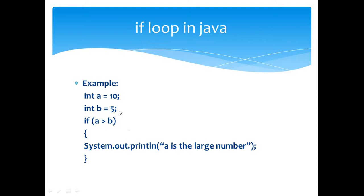I use a greater than b. Here it is true because 10 is always greater than 5. So the loop body executes because the condition is a true one and it will print a is the large number.